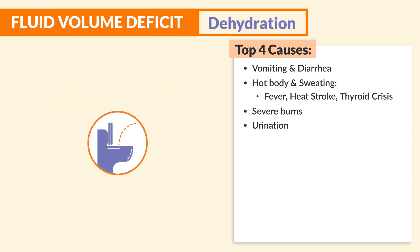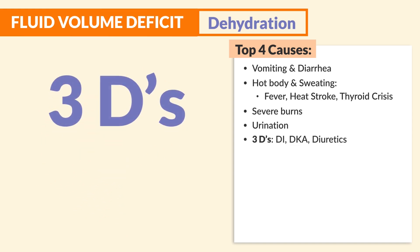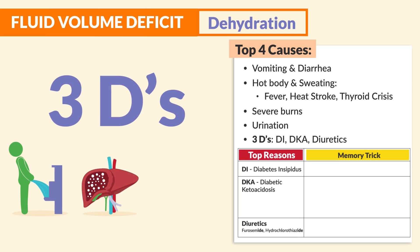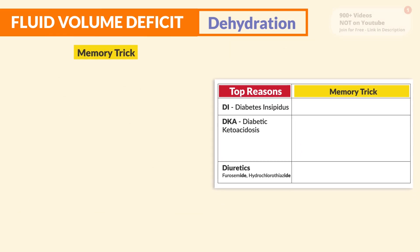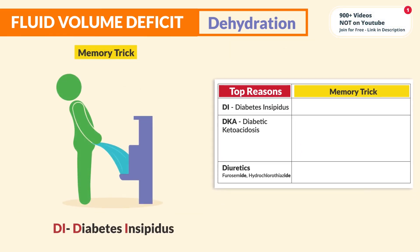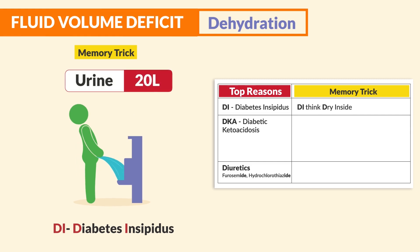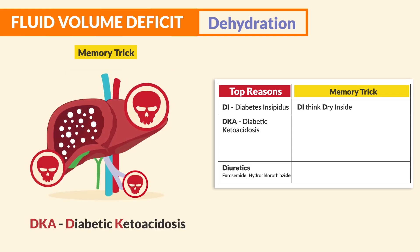Urination also drains fluid from the body. The big ones to write down are the three D's: DI, DKA, and diuretics. These are the top reasons clients lose fluid in the clinical setting. First is DI — diabetes insipidus. Think 'DI, dry inside' — clients diurese fluid up to 20 liters a day, producing lots and lots of urine.